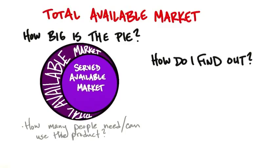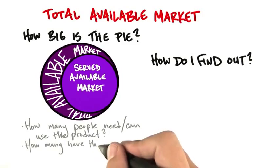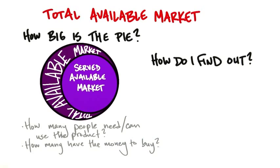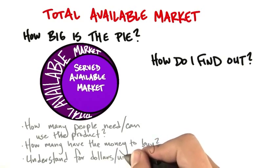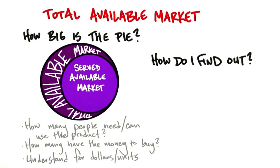If you're making a mobile app for an Android platform, the first question is: how many people are theoretically going to be using Android platforms this year and over the next five years? Now you can start estimating your served available market. How many people have the money to buy the product — are you a 99-cent product or a $99 product? You're narrowing the market based on pricing or availability. You want to do thought experiments: how large would the market be in dollars if everyone in the served available market bought? You want to understand this in both dollars and units.